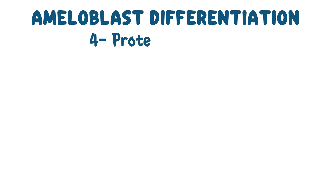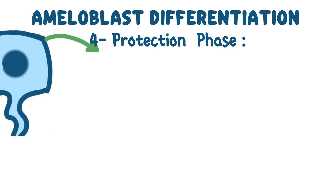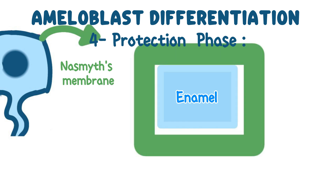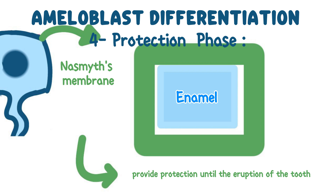Stage 4: Protection phase. After the completion of mineralization, ameloblasts secrete a substance that resembles the basal membrane, known as Nasmyth's membrane. This substance surrounds the enamel, providing protection until the eruption of the tooth. Once the tooth erupts, this protective layer disappears.